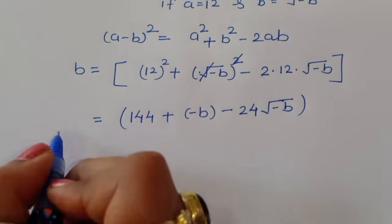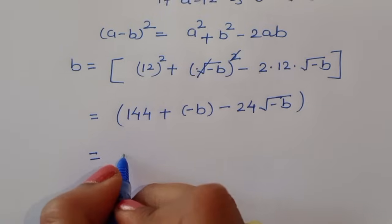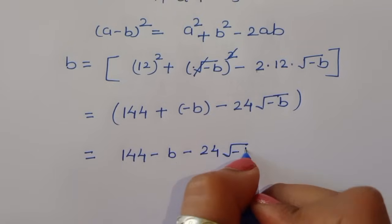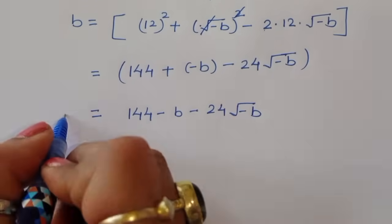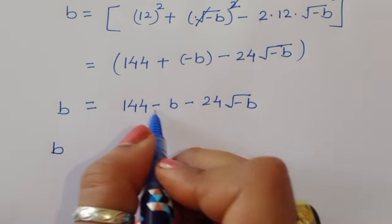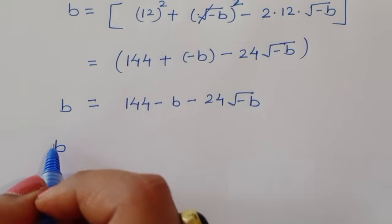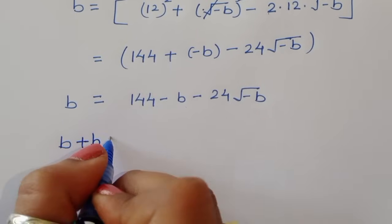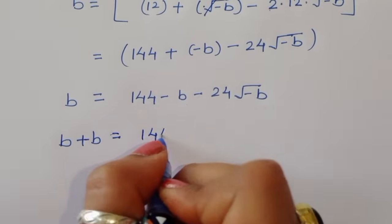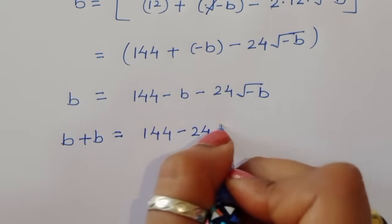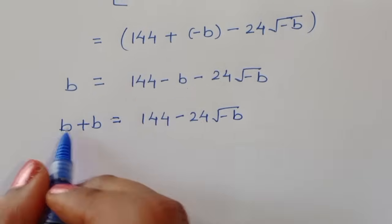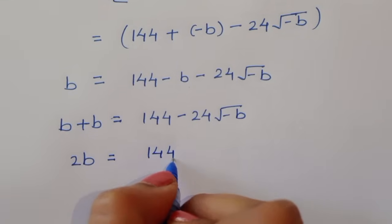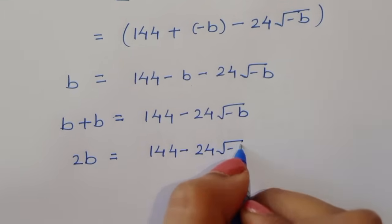So b is equal to 144 minus b minus 24 square root of minus b. Bringing the minus b from the right-hand side to the left-hand side, it becomes plus b. So b plus b is equal to 144 minus 24 square root of minus b, giving us 2b is equal to 144 minus 24 square root of minus b.